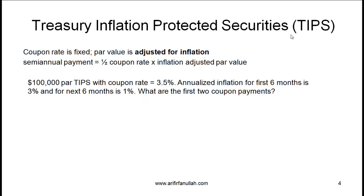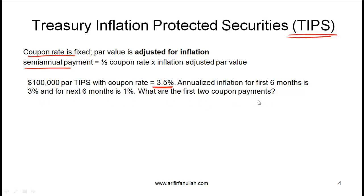Let's talk about Treasury Inflation Protection Securities, or TIPS, in a little more detail. When an investor invests in a TIPS, he is protecting himself against inflation. For a TIPS security, the coupon rate is fixed but the par value is adjusted for inflation, and these securities make semi-annual payments where each payment equals half times the coupon rate times the inflation-adjusted par value. Let's look at the example from the curriculum: a $100,000 par value TIPS with a coupon rate of 3.5%, where the inflation rate for the first six months is 3% and for the next six months is 1%. What are the first two coupon payments?